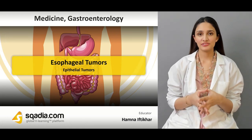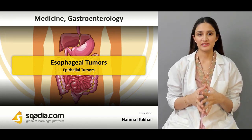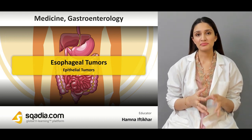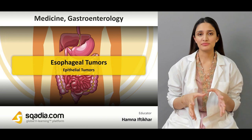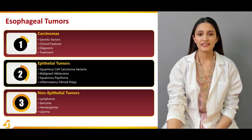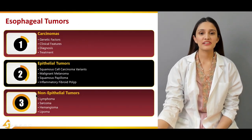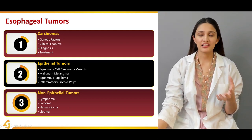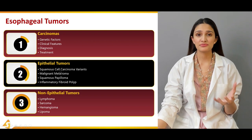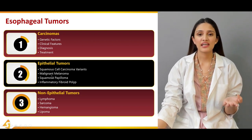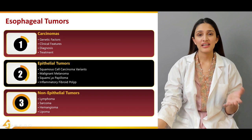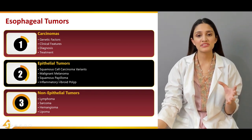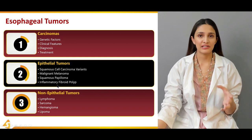In this second section on esophageal tumors, we will be studying the different malignant types of epithelial tumors and the benign types of epithelial tumors. The malignant types include squamous cell carcinoma and its rare variants, and malignant melanoma. The benign types include squamous papilloma and inflammatory fibroid polyp.